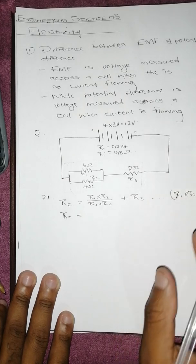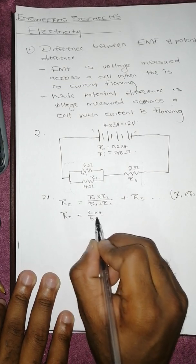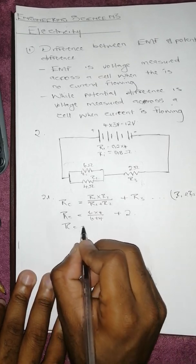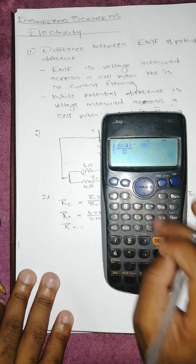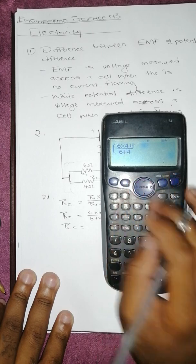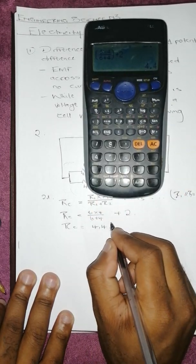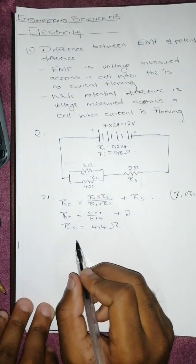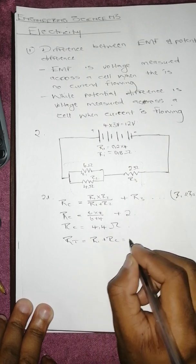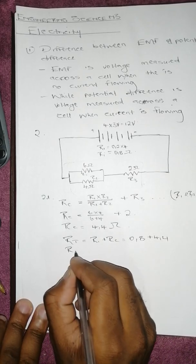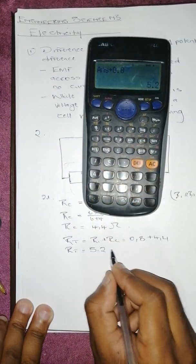So Rc equals 6 times 4 over 6 plus 4, plus 2. That gives us 2.4 plus 2, which equals 4.4 ohms. Then to get the total resistance of the whole circuit including the internal resistance, RT equals Ri plus Rc, so it's 0.8 plus 4.4, therefore RT equals 5.2 ohms.